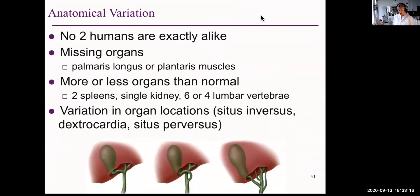There is anatomical variation in humans. We're not all exactly alike. We spoke before a little bit about ribs. Do we all have exactly the same number of ribs? No, we do not necessarily, but the average, of course, is 12. But no two humans are exactly alike.